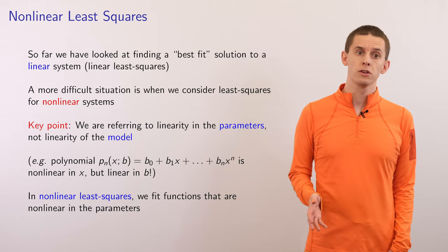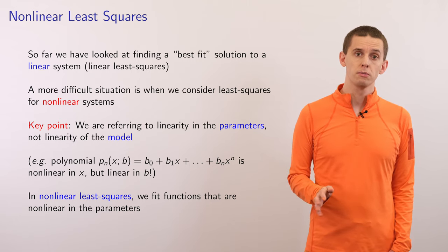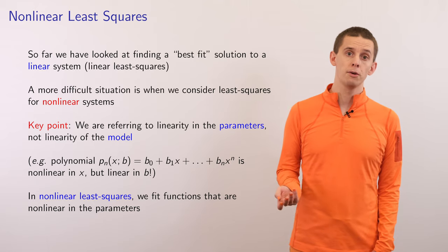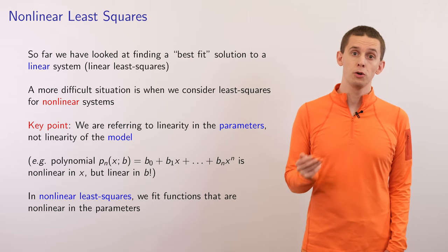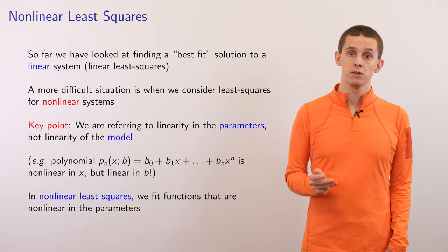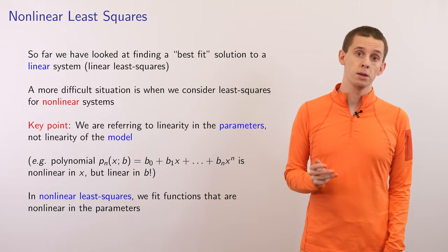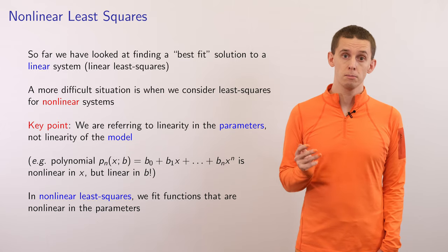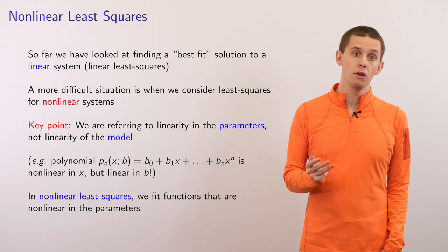So far we've looked at finding the best fit solutions using linear least squares methods. A more difficult situation is if we want to do least squares for nonlinear problems. Specifically, when we talk about linearity we're referring to linearity in the parameters and not in the model. If we think about polynomial fitting, a polynomial p of x using parameters b is nonlinear in x but linear in the parameters b, which results in a large simplification allowing us to develop the linear least squares methods. So here in nonlinear least squares we're going to fit functions that are nonlinear in the parameters.